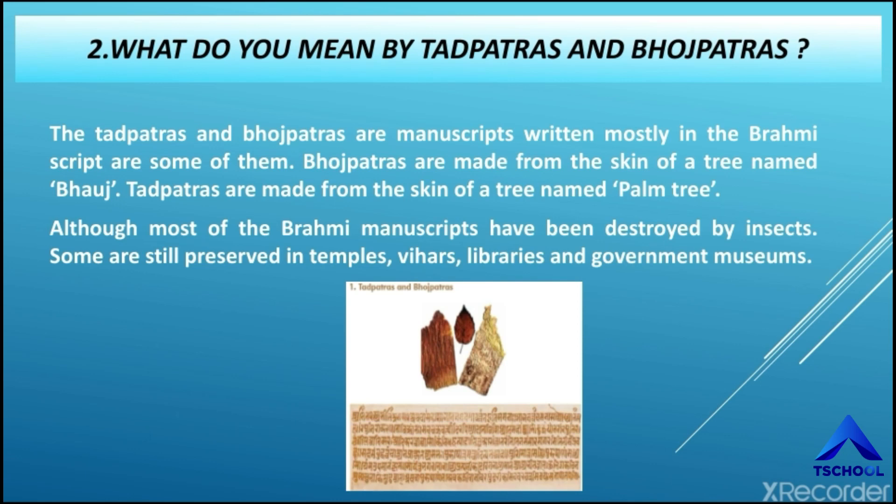The Tarpatras and Pojpatras are manuscripts written mostly in Brahmin scripts. Pojpatras are made from the skin of a tree named Poj.